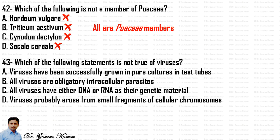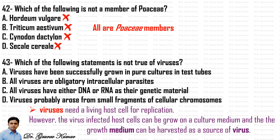Next question: which statement is not true of viruses? Viruses are obligate intracellular parasites requiring a living host. Viruses need a living host cell for replication; however, virus-infected host cells can be grown on culture media and harvested as a source of virus. The virus itself cannot grow on culture media. Therefore, the incorrect statement is that viruses have been successfully grown in pure culture in test tubes. All other options — obligate intracellular parasites, DNA or RNA as genetic material, origin from cellular chromosomes — are correct.